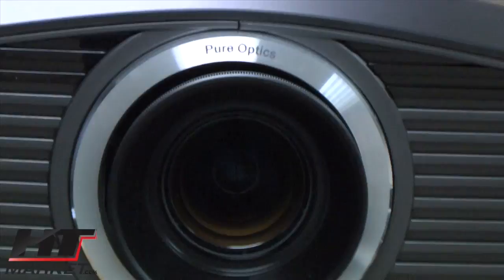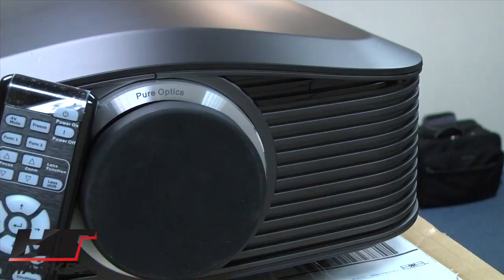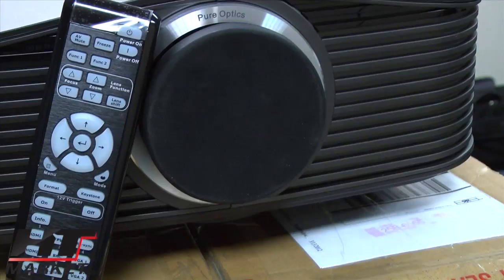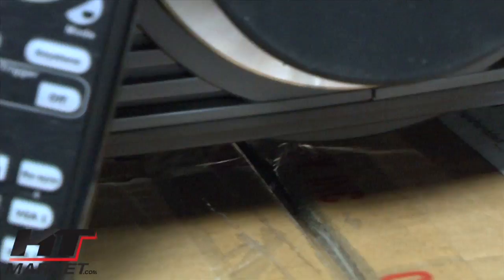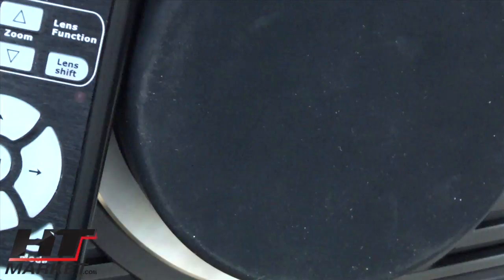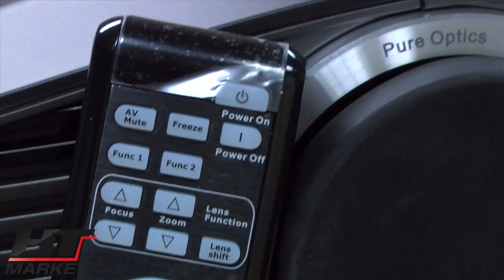Basically it's a full-function remote. You've got all your keys. You've got zoom and focus, power, zoom, and focus. You've got lens shift on there. And you've got all your inputs on the bottom. Each input. Your 12-volt trigger if it's on or off. And basically you can set up the projector through the remote. Very easily. Power on, power off.